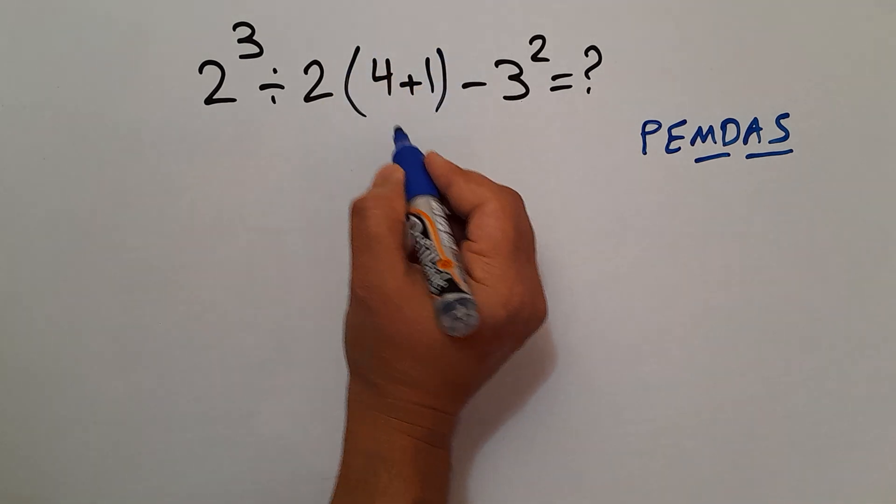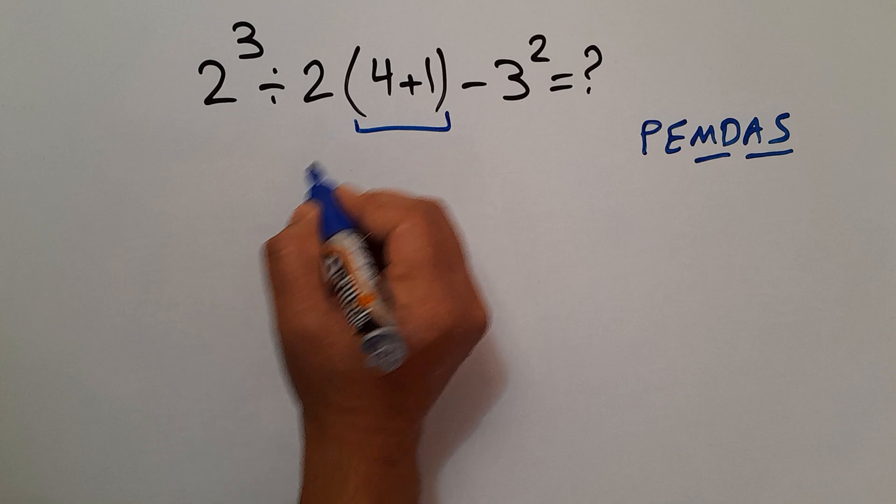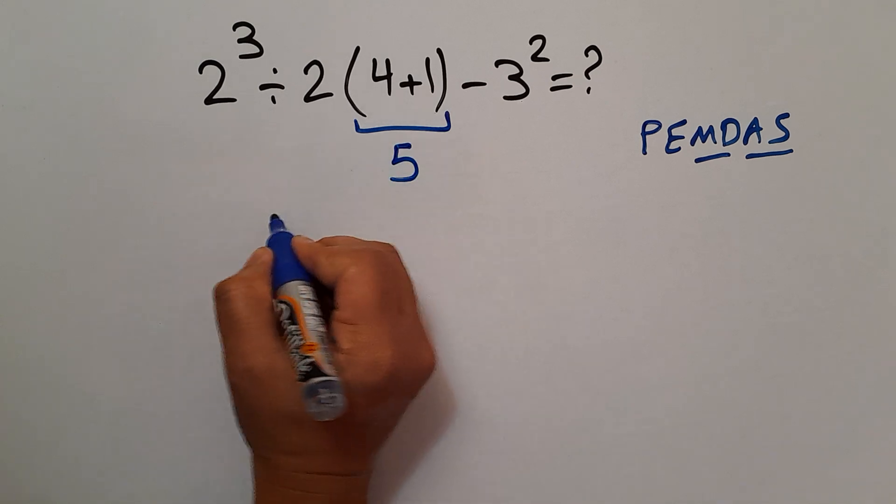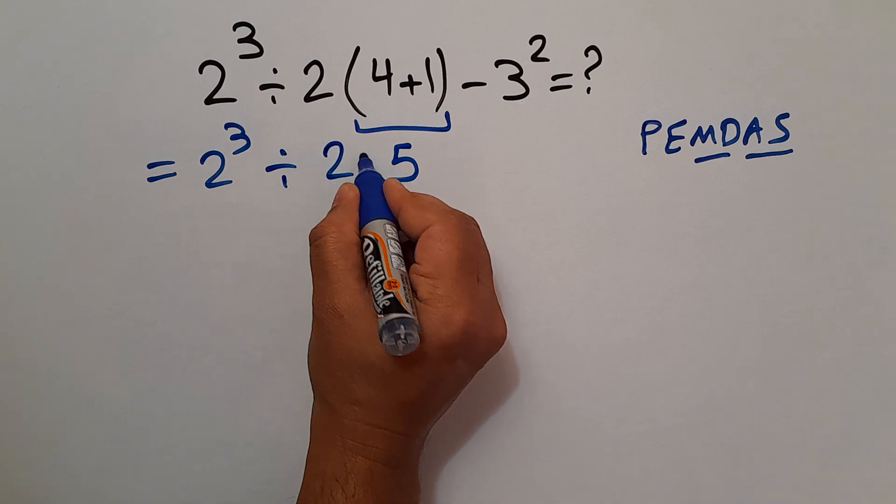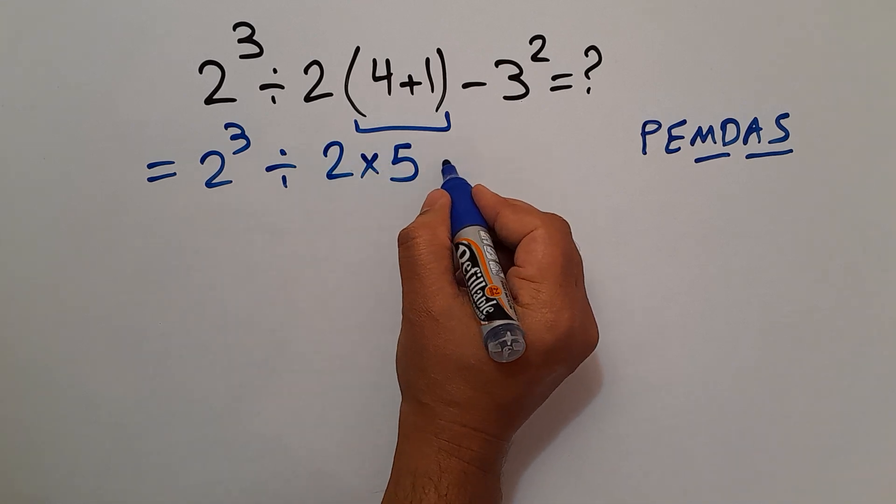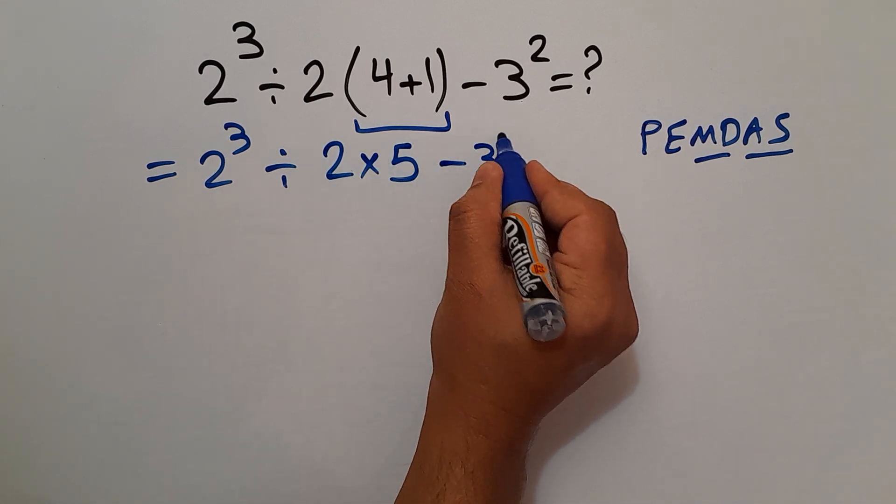4 plus 1 equals 5, so we have 2³ ÷ 2 × 5 - 3².